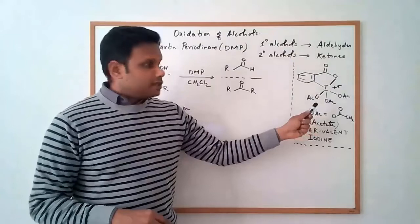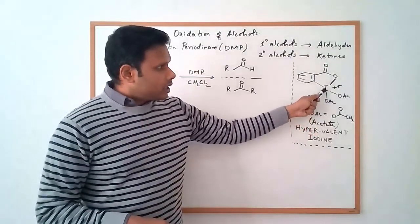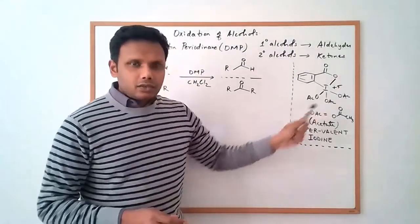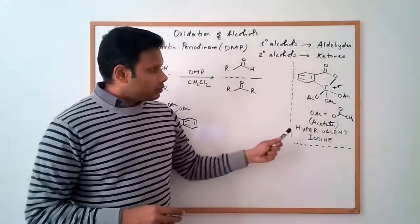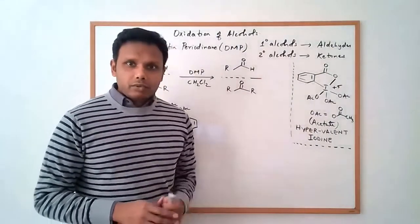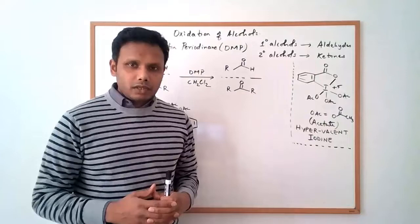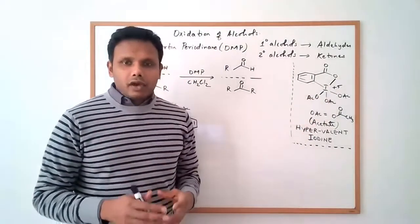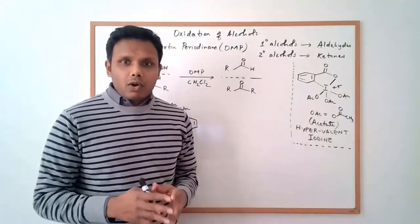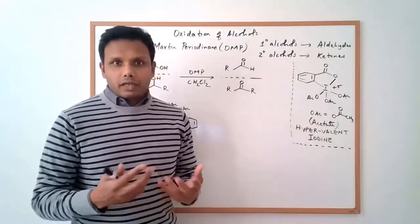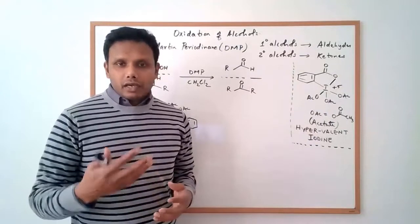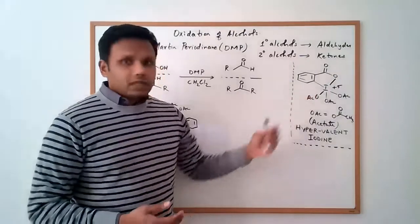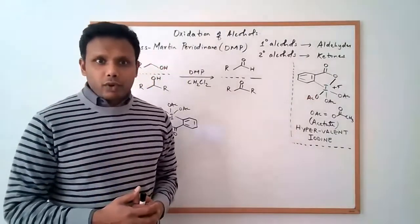I've put the structure of Desmartin periodinane here. It is an iodine-based reagent with several acetate groups on it. And one thing I want to point out here is that this is an example of a hypervalent iodine reagent because the iodine is in a plus-five oxidation state. So contrast that to all other iodine or halogen compounds you've seen where the iodine or any other halogen forms one bond. But this is an example of a reagent where the iodine has five bonds to it.